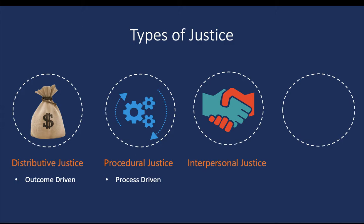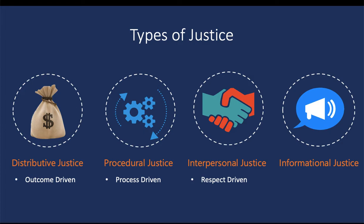The third type of justice is called interpersonal justice, and this is respect-driven. It asks how the authority figure treated the employee and whether they received fair treatment during the decision-making process and their interactions. The last type is called informational justice, which is information-driven. This looks at how much information individuals were given during the decision-making process — were they given fair amounts of information, or were they left in the dark on key decisions? With each type of justice, there are different rules an authority figure can follow, and by following these rules, they will be perceived as more fair and just in their decision making.